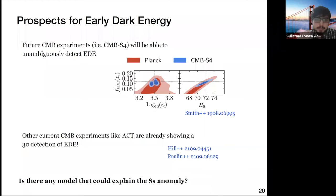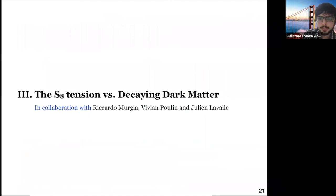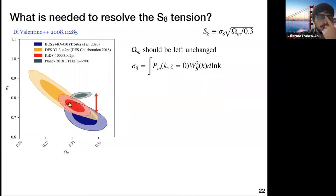What remains clear is that EDE is not able to address the S8 tension at all. This motivates another project where we explore a different model — decaying dark matter — in relation to the S8 anomaly. This project was done in collaboration with Ricardo Murgia, Vivian Poulin, and Julien Lesgourgues.